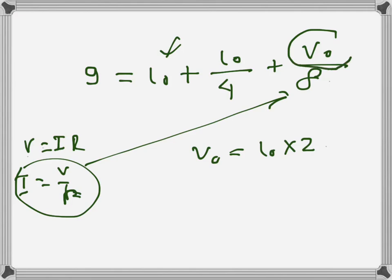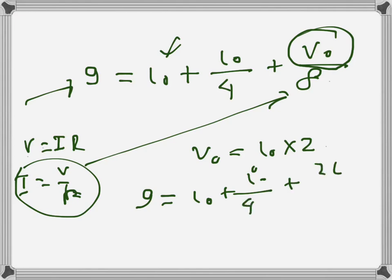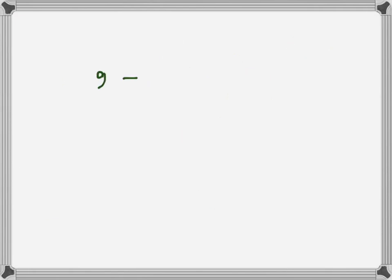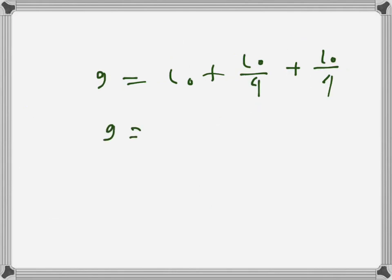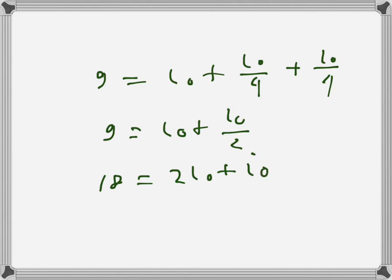Now we substitute v_naught with i_naught in the KCL equation. That gives us i_naught plus i_naught over 4 plus 2·i_naught over 8 equals 9, which simplifies to i_naught plus i_naught over 4 plus i_naught over 4 equals 9. Multiplying both sides by 2 gives 2·i_naught plus i_naught over 2 plus i_naught over 2 equals 18, so 3·i_naught equals 18, meaning i_naught equals 6 amps.